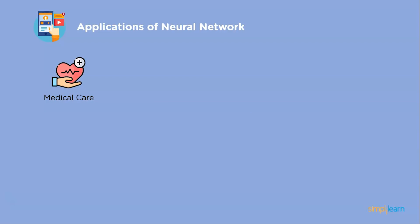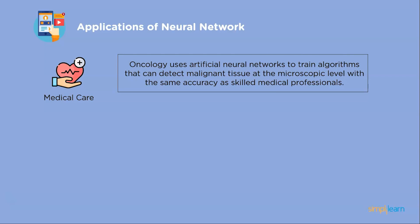In medical care, oncology uses artificial neural networks to train algorithms that can detect malignant tissues at the microscopic level with the same accuracy as skilled medical professionals. Using facial analysis on patient images, certain rare diseases that appear physically can be detected in their earlier stages. The widespread adoption of artificial neural networks in healthcare can increase diagnostic skills and raise the global standard of healthcare.